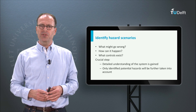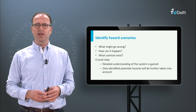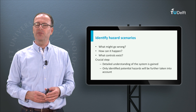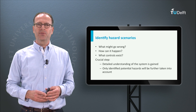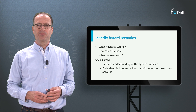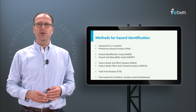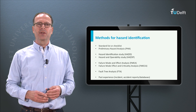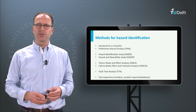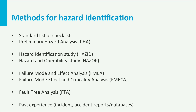There are several different methods for the identification of hazards, and I list them on this slide. You can come across their acronyms in hazard studies. Each method has its own benefits and drawbacks. In this lecture I want to focus specifically on one method, called fault tree analysis.